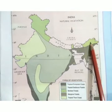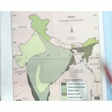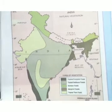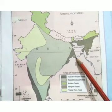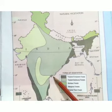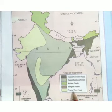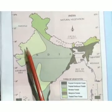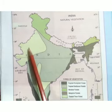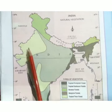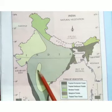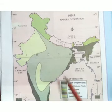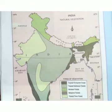Mangrove forest is available in certain coastal areas. The last type is tropical thorn forest — when you go to the western side of the country, Rajasthan and Gujarat, you will find tropical thorn forest, and it is also available in the central part of India.